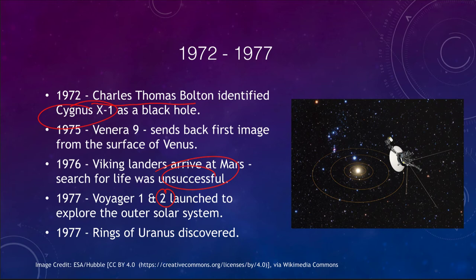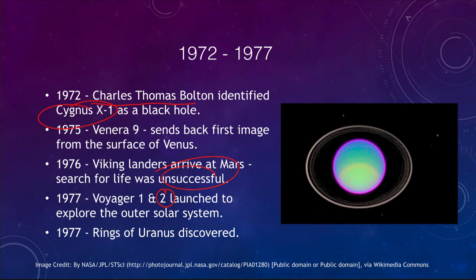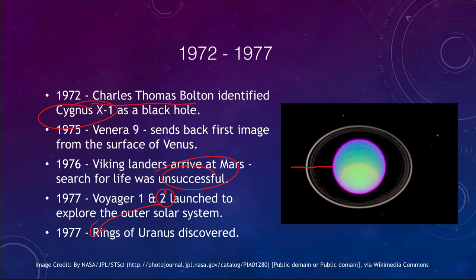Also in 1977, the rings of Uranus were discovered when Uranus passed in front of a star and the star dipped in brightness as the rings passed in front of it before the planet itself blocked the star completely. This was important because Voyager 2 was launched around that time and would get the chance to actually study those rings in person, knowing in advance that they were there.